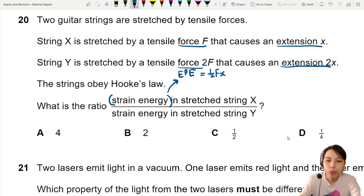Okay, now the ratio. The first part, we need to find strain energy in X. So half Fx. That's it, we're just writing what it is. That's for the top part.